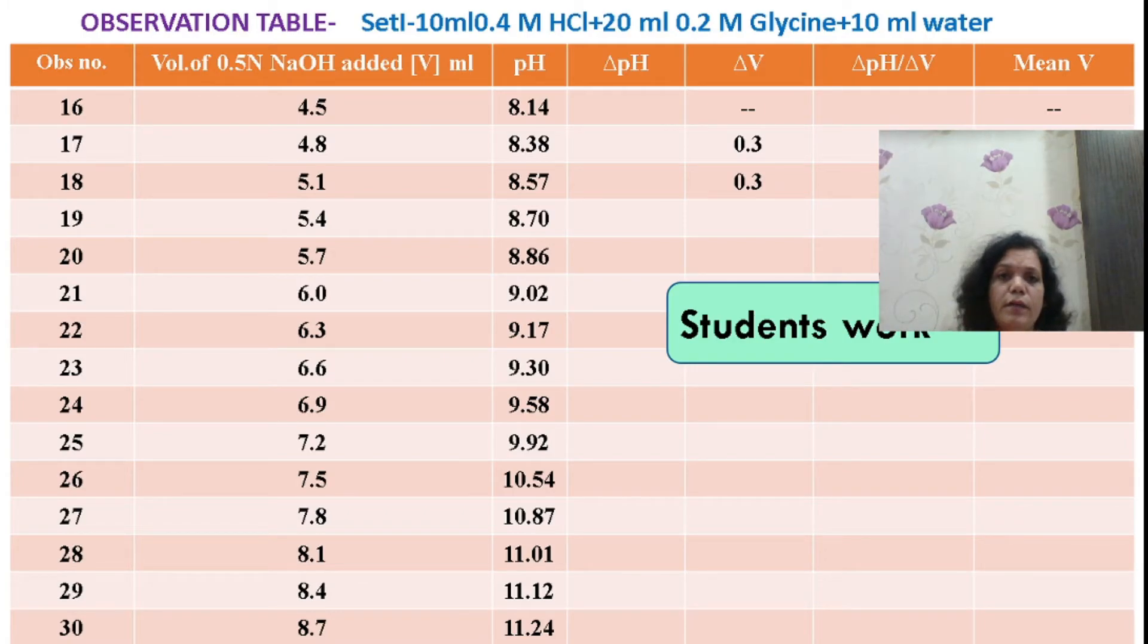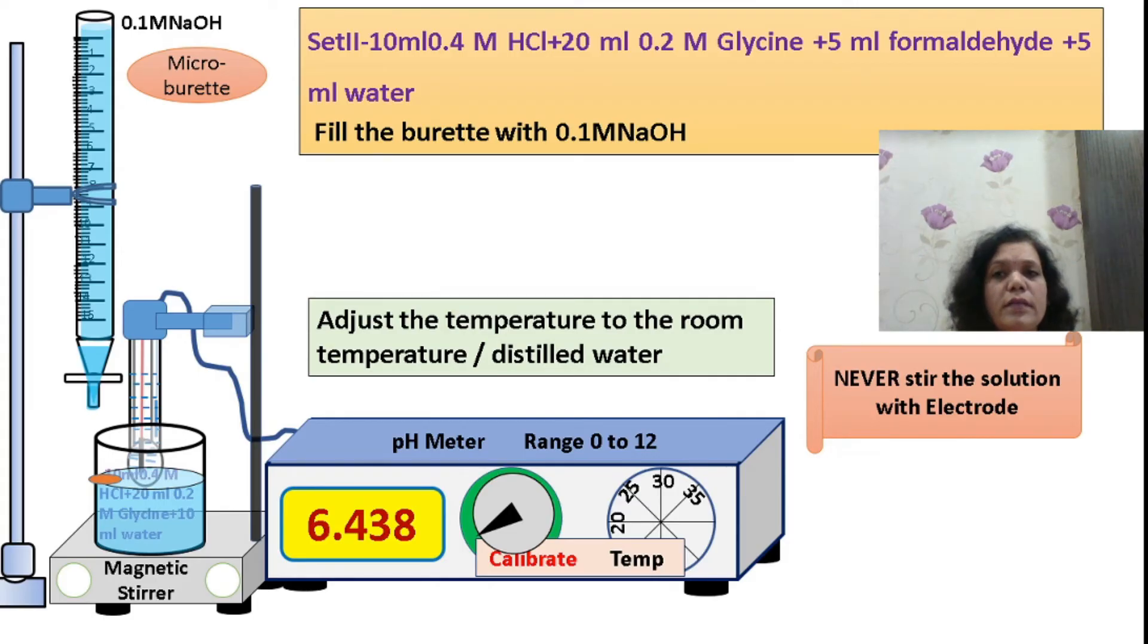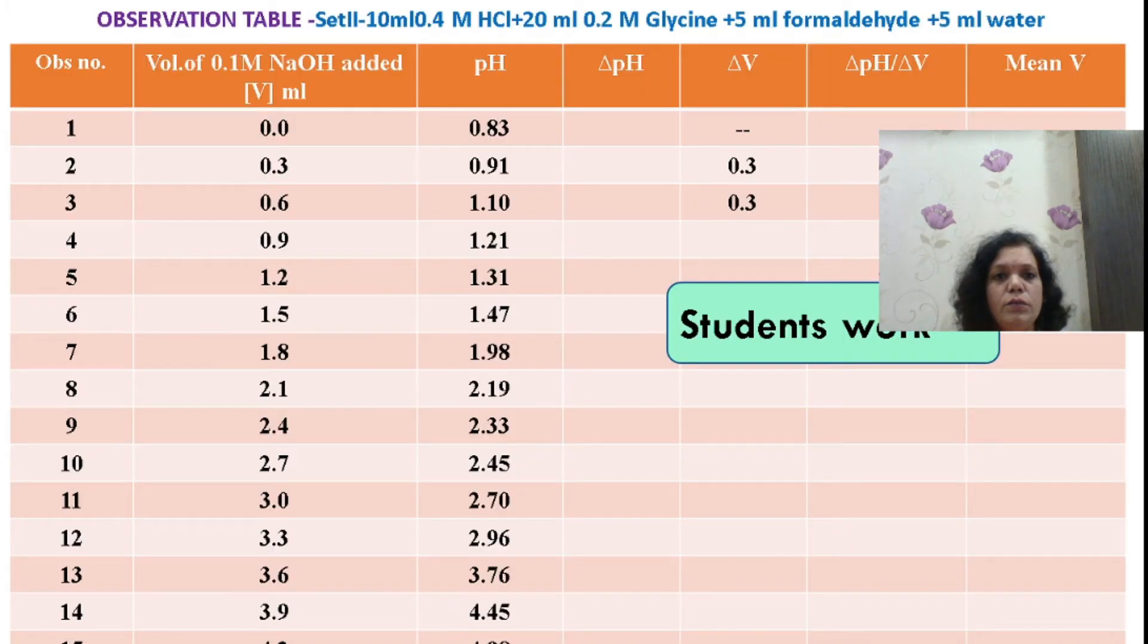To find the pK2 value, perform the titration in a similar way. Just instead of 10 ml water, use 5 ml formaldehyde and 5 ml water. The reaction during this process allows us to find the pK2 value by adding 0.3 ml of NaOH. Here I have provided readings for this particular solution titrated with 0.1M NaOH. Use these readings to calculate pK1 and pK2 values.